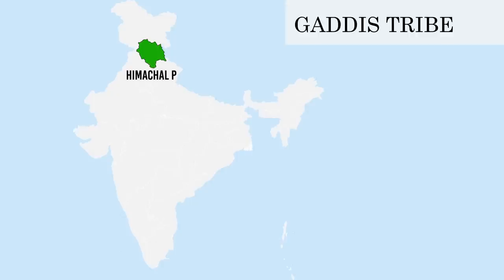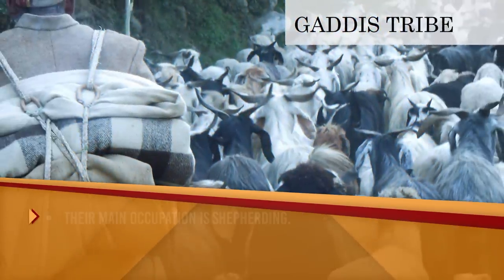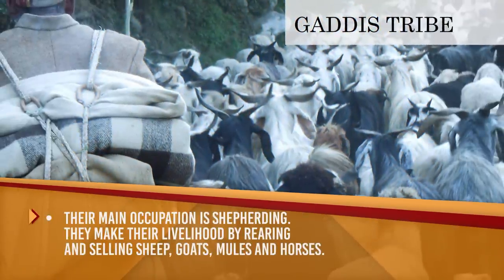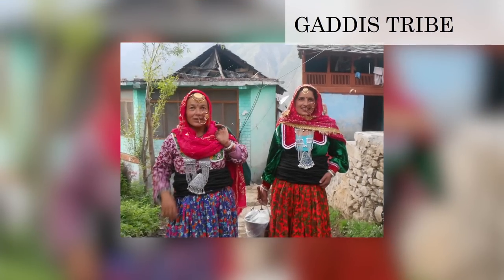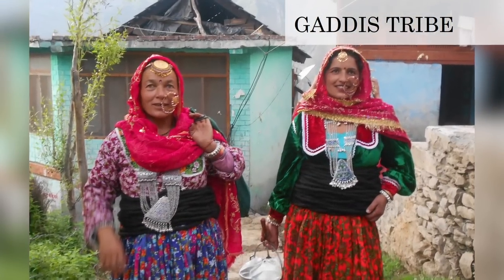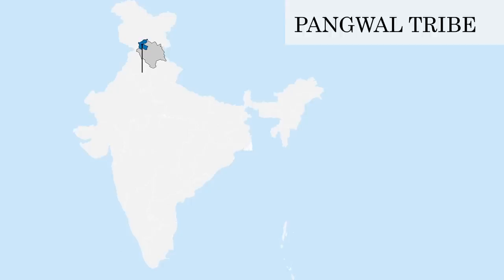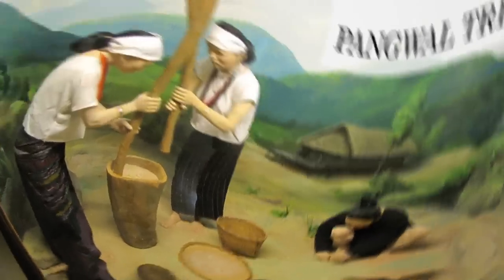Ghadi Tribe: they mainly dwell around Himachal Pradesh in the regions of the Dhauladhar mountain range, Chamba, Bharma, Amur and areas near Dharamshala district. Their main occupation is shepherding, and they make their livelihood by rearing and selling sheep, goats, mules and horses. They speak the Ghadi language but use Takri and Hindi for writing. Pangwal Tribe: they are the inhabitants of the Pangi valley of the Chamba district in Himachal Pradesh and are mostly engaged in farming.